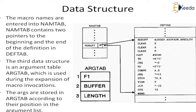The actual data structure is shown in the slide. In this figure, as discussed, the NAM table, definition table, and argument table are present. The name table contains pointers to the definition table start as well as definition table end. The macro names are entered into the NAM table, which contains two pointers — beginning and end — to the definition entry.